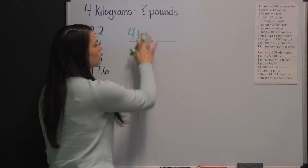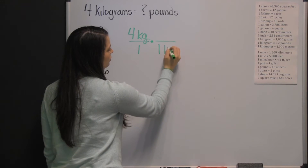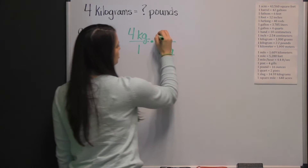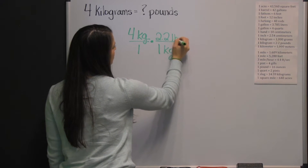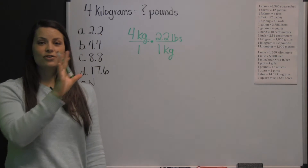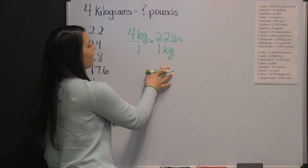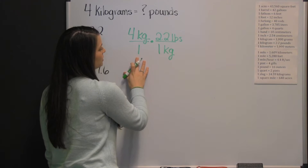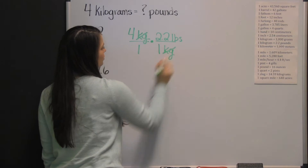We want our kilograms to be in diagonal position, so I'm going to put my 1 kilogram in the denominator. One kilogram is 2 and 2 tenths pounds, so our 2 and 2 tenths pounds goes in the numerator. The reason for putting your units in diagonal positions is because you're multiplying fractions together, and when you multiply fractions, you can cross-cancel your units.